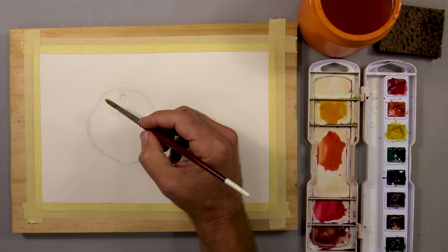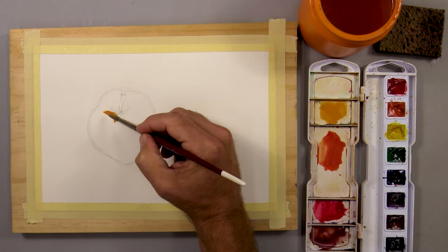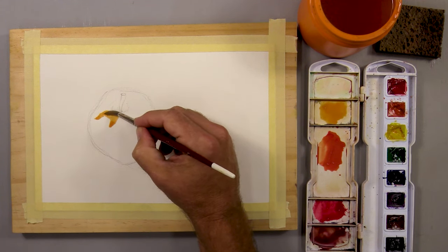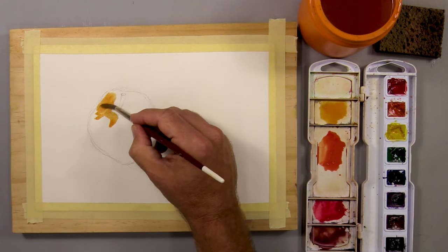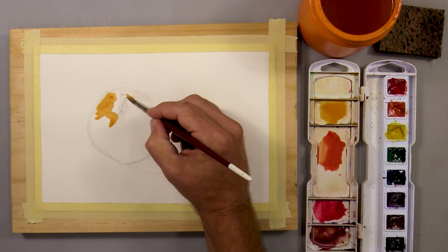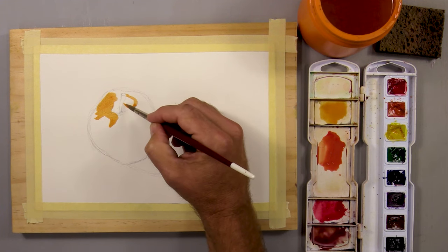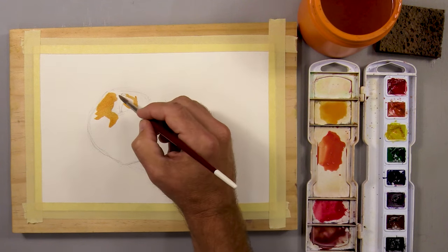I start by taking my yellow-orange color or lightest color and dabbing it around the top of the apple. I notice three highlight areas that I want to avoid. I'm going to leave those the white of the paper. I carefully go around each highlight.